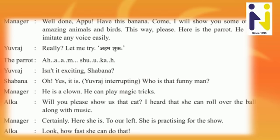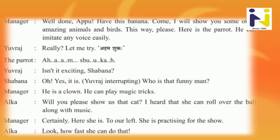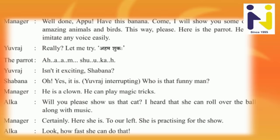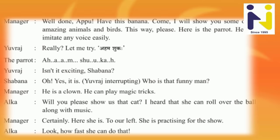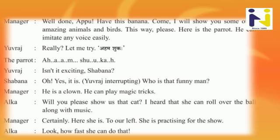Alka says: 'Will you please show us that cat? I heard that she can roll over a ball along with music.' — Roll over means aaadotu. Along with music means sangit ni sathe. 'Te sangit sathe ek ball/dada par aadoti shake chhe.'